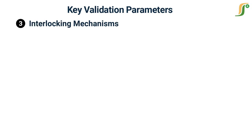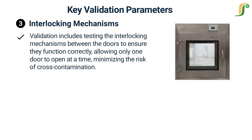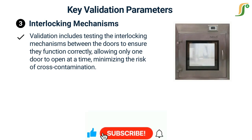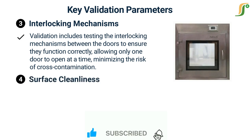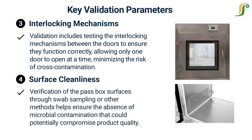Interlocking mechanisms: validation includes testing the interlocking mechanisms between the doors to ensure they function correctly, allowing only one door to open at a time, minimizing the risk of cross-contamination. Surface cleanliness: verification of the pass box surfaces through swab sampling or other methods helps ensure the absence of microbial contamination that could potentially compromise product quality.